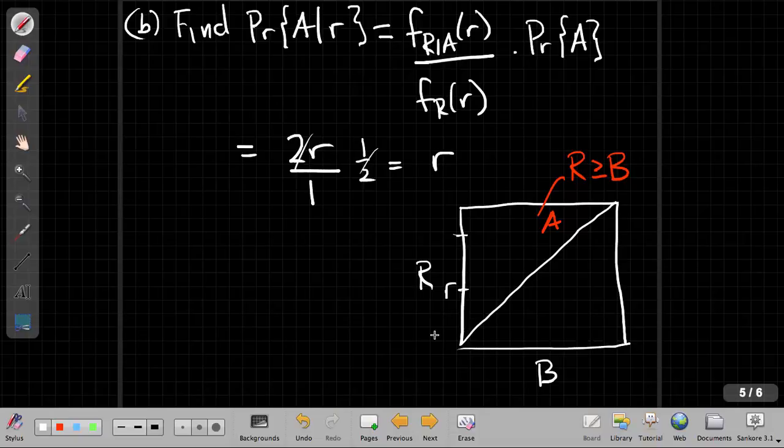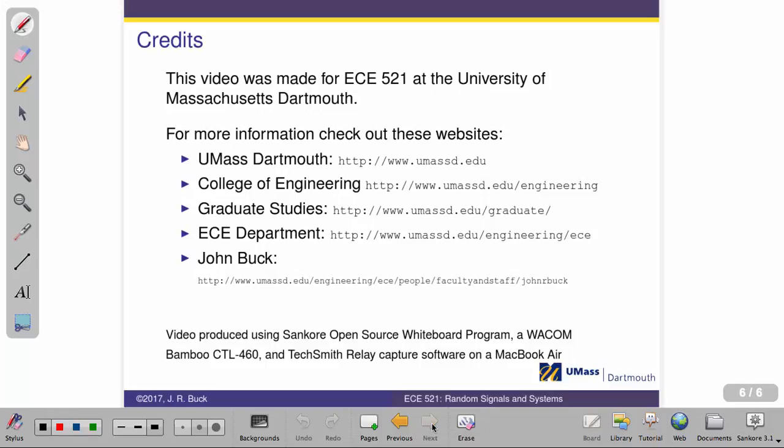So thanks again for your attention. This is, again, an example. In this example, we saw how we defined conditional densities from conditional distributions by taking a derivative. And then a quick example on, again, on a two spinner problem of how we can solve for conditional probabilities of discrete events conditioned on continuous random variables.